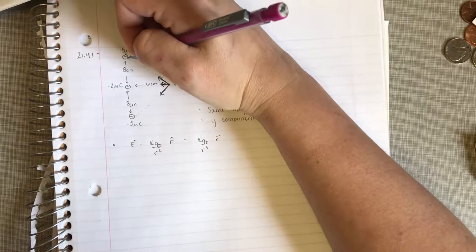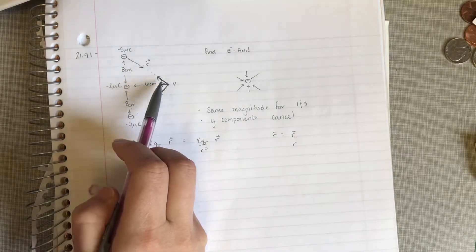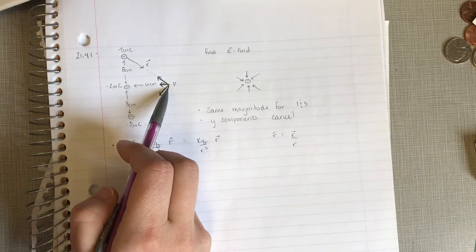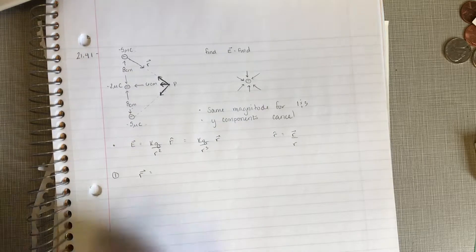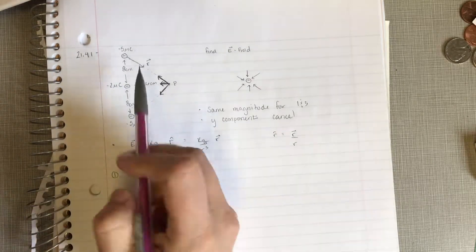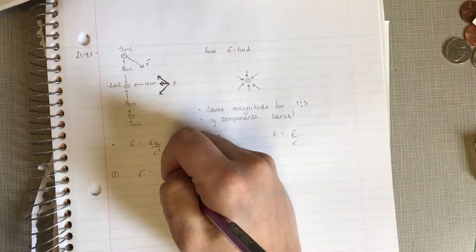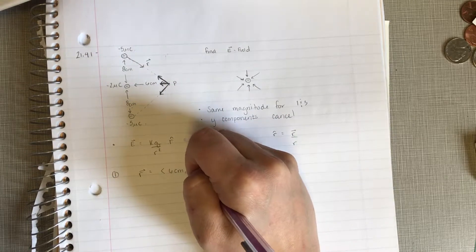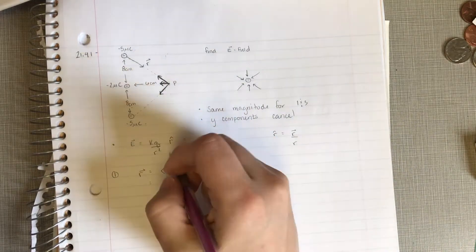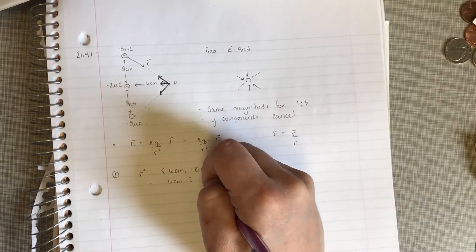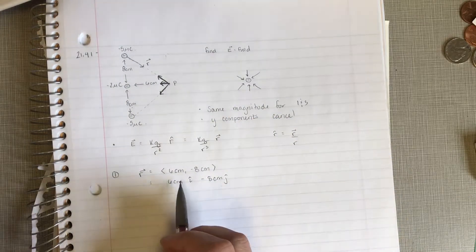Our r vector always points from the charge to the place that we care about. And this actually goes all the way over, but this is a small picture. I can't draw all that stuff on there. So for charge 1, our r vector, if we write it in this notation, if I start here, I'm going to go over 6 centimeters and down 8 centimeters. So my r vector is 6 centimeters in the x direction and negative 8 centimeters in the y direction. This can also be written in i, j, k notation with some hats. Some i hats and some j hats. So those are exactly the same. Just x, y.